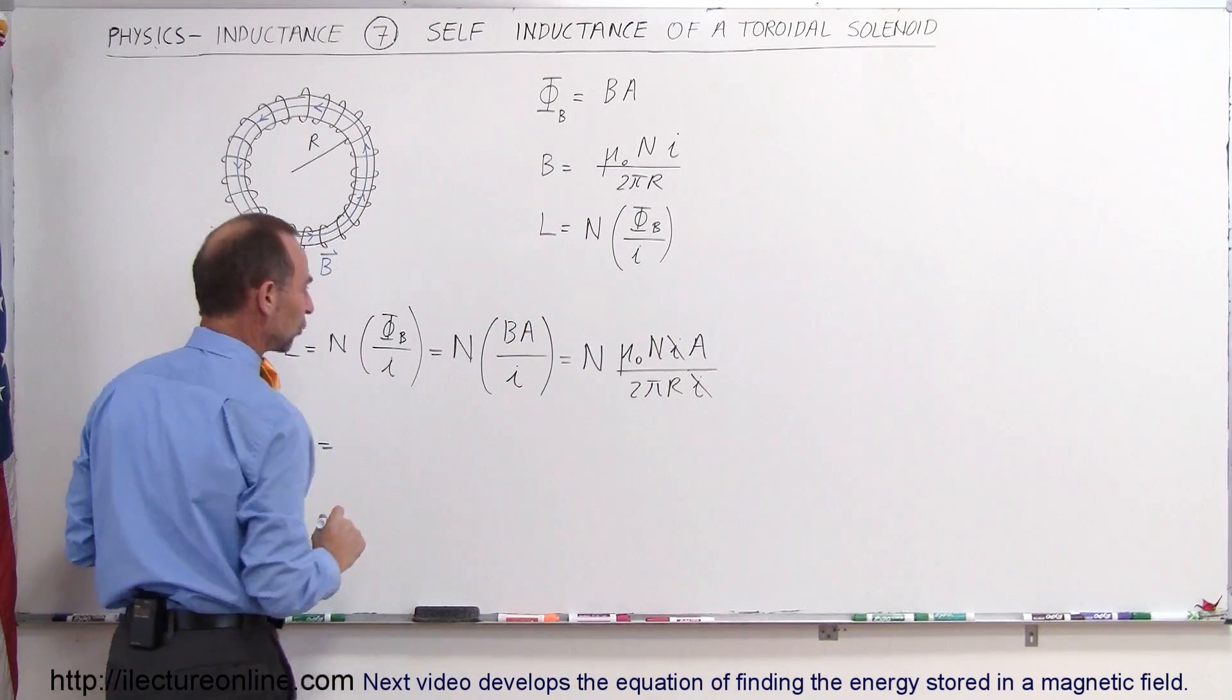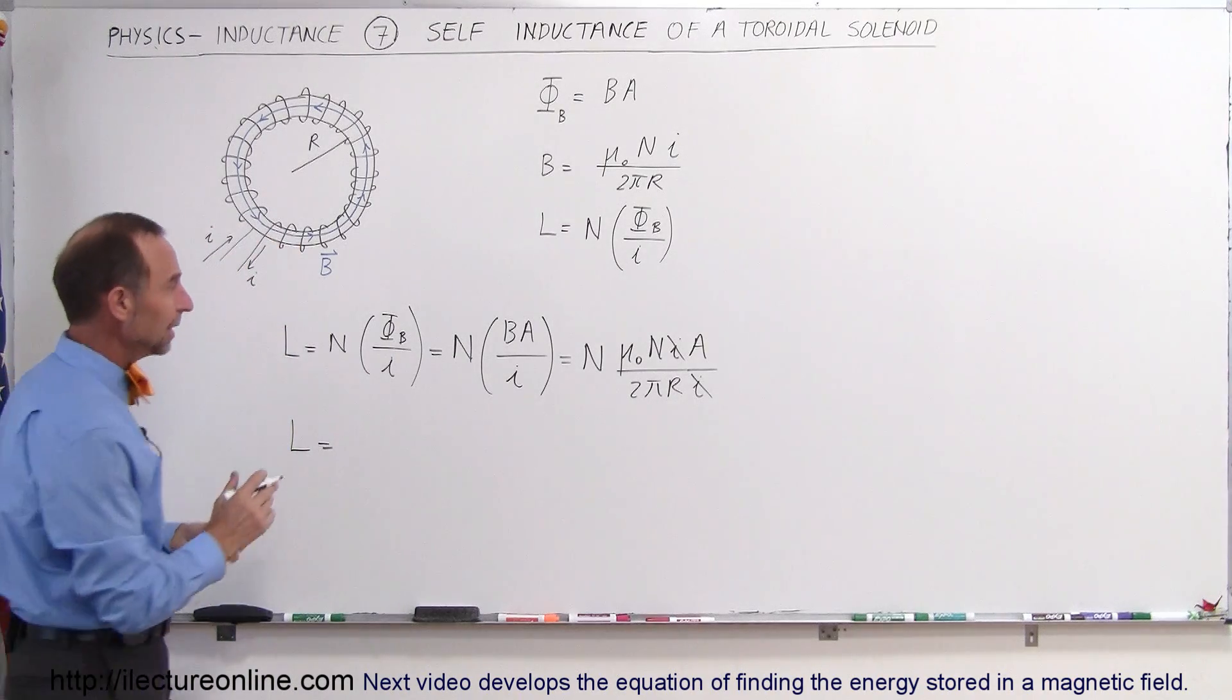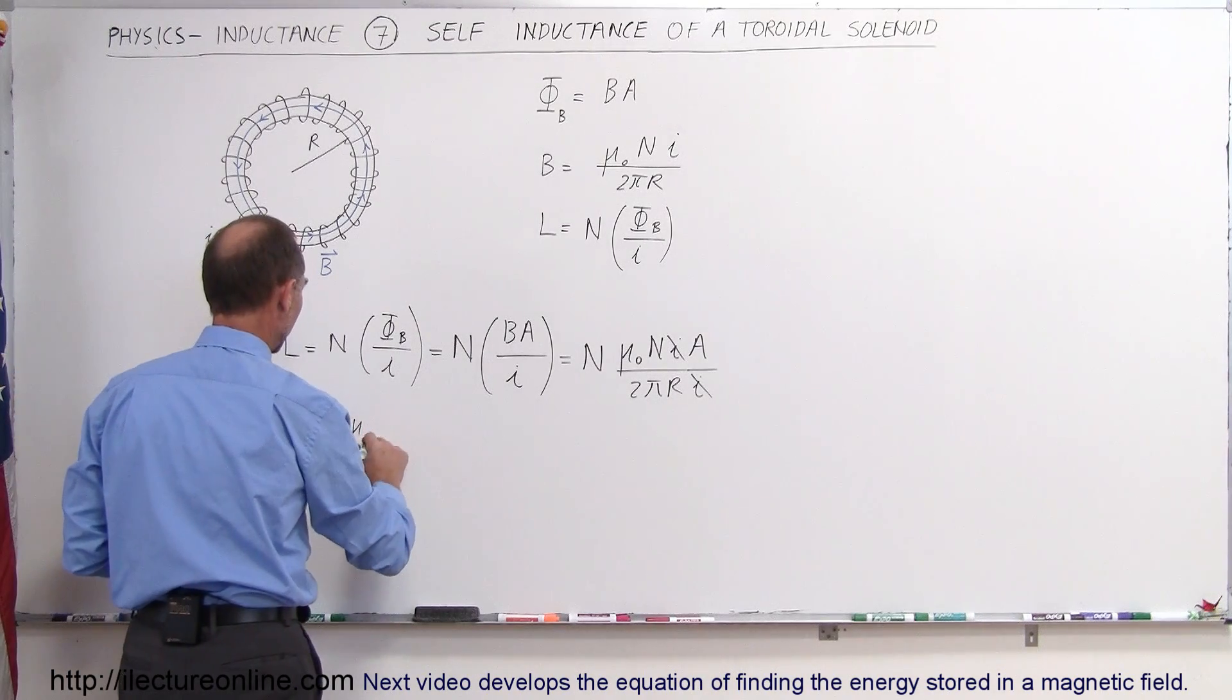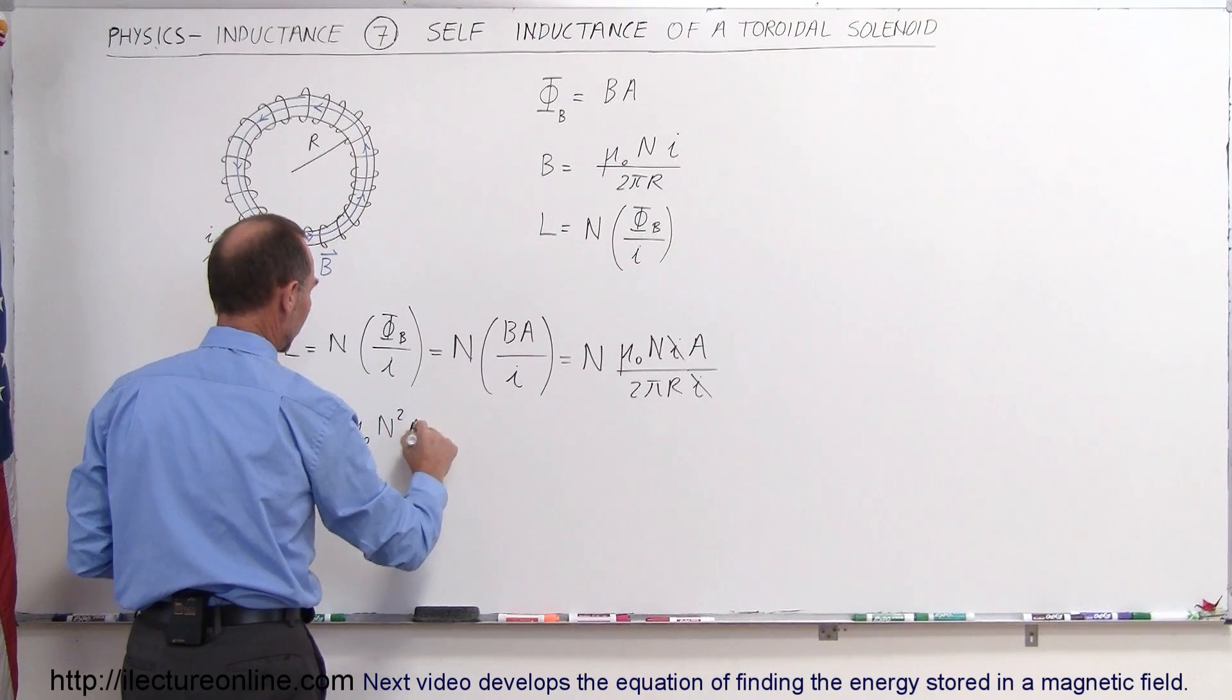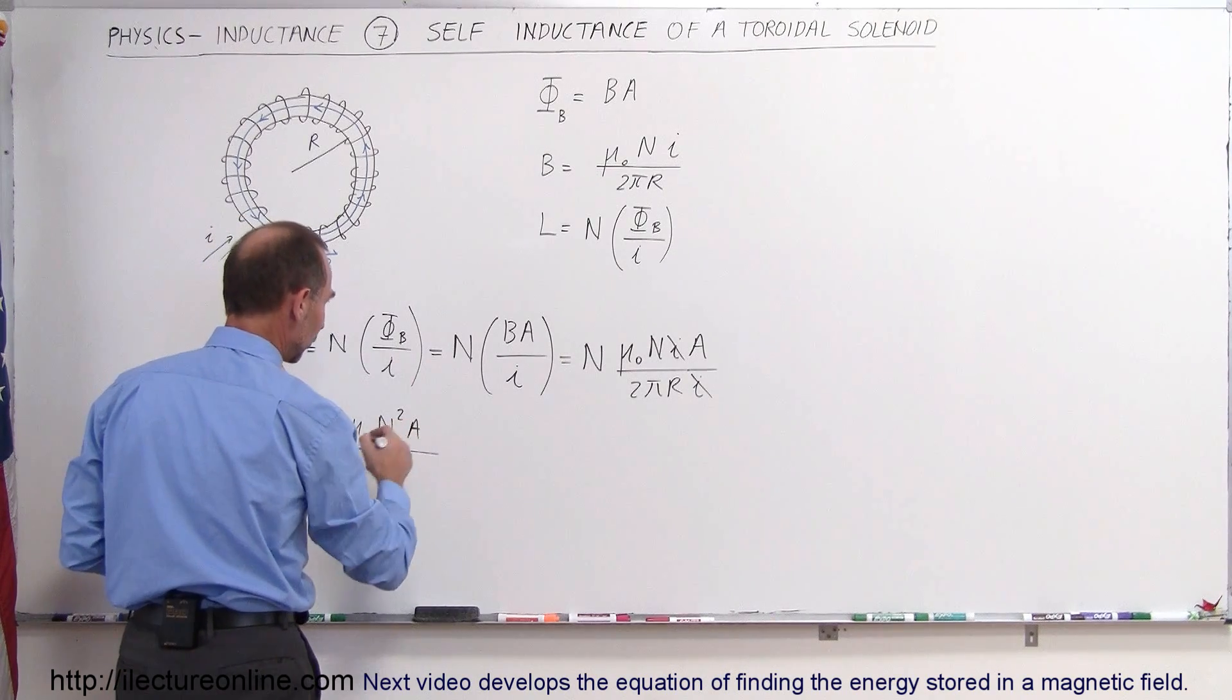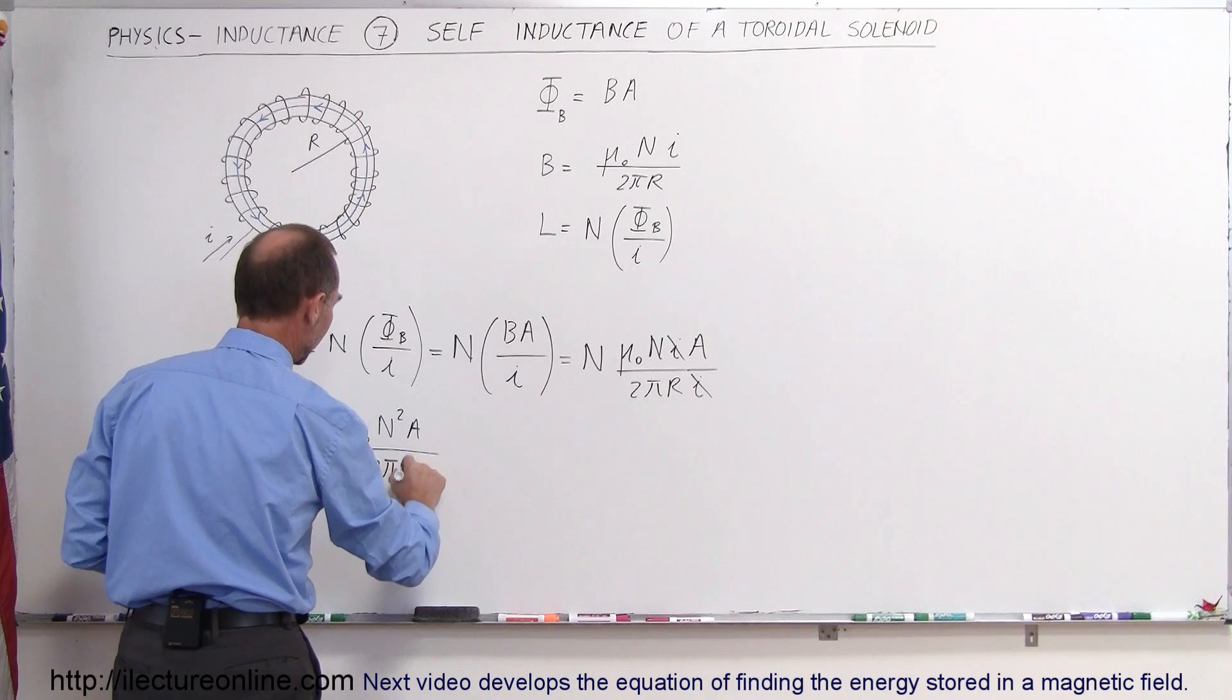So finally the self-inductance of a toroidal solenoid can be written as μ₀ times N squared times the cross-sectional area divided by the length or the circumference 2π r.